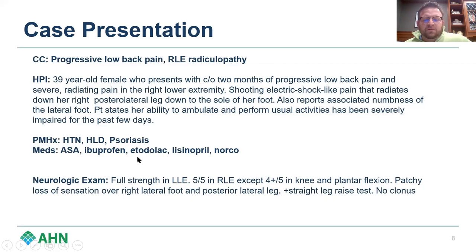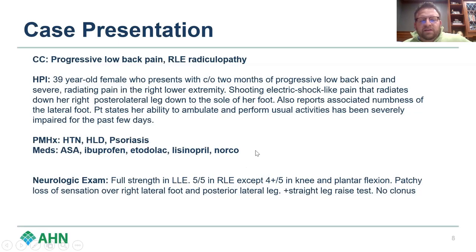Her medications include aspirin, ibuprofen, Norco for pain, and lisinopril for hypertension. On exam, the left lower extremity is full strength. The right lower extremity is full strength except four-plus out of five in the knee and in plantar flexion, somewhat limited by pain. There is patchy loss of sensation over the right lateral foot and posterior lateral leg, a positive straight leg raise test, and no clonus.